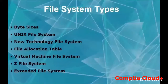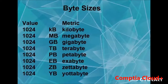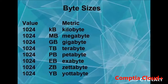Now we're going to talk about file system types — the byte sizes and different file systems used with each operating system. With byte sizes you have kilobytes, megabytes, gigabytes, terabytes, petabytes, exabytes, zettabytes, and yottabytes — each one being the next level of storage. 1024 kilobytes make one megabyte, and 1024 megabytes make one gigabyte, continuing up in the same manner. Some of these file systems can support up to one yottabyte.